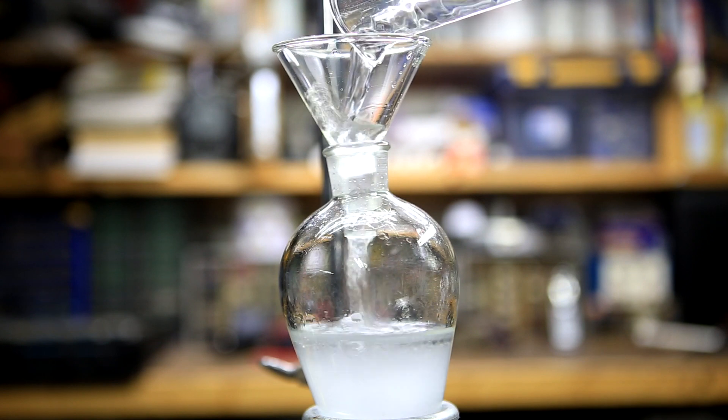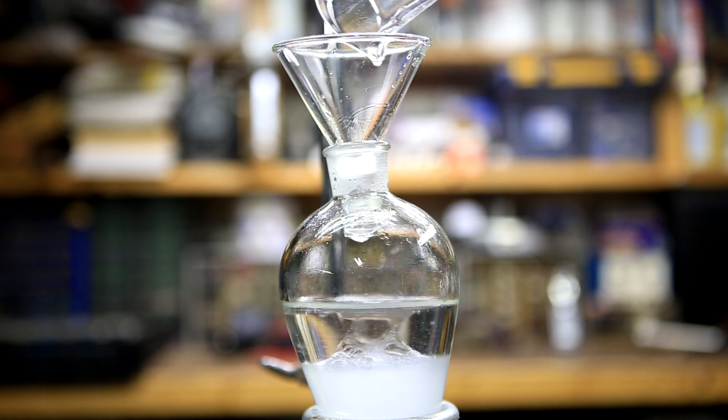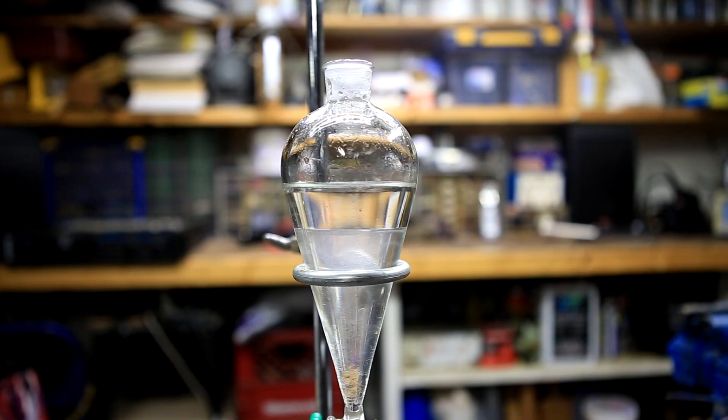This was then washed with 70 ml of saturated sodium chloride solution. If you are lucky, this should more or less break the emulsion, but you should let it sit there for a little bit for the two layers to settle completely.